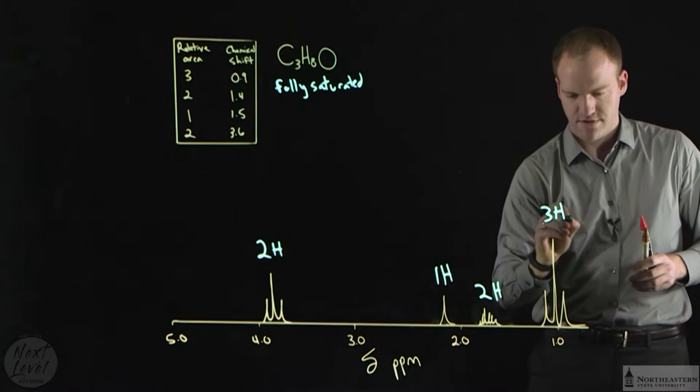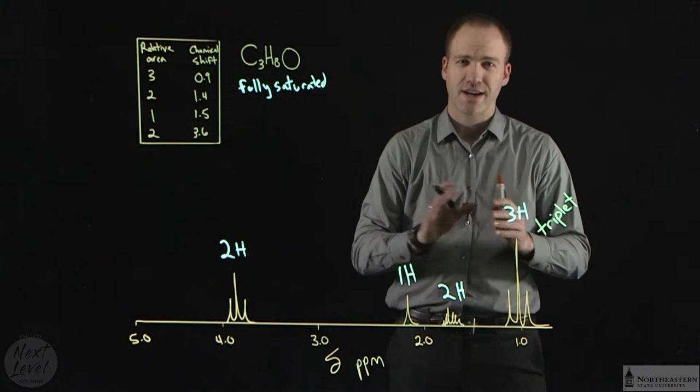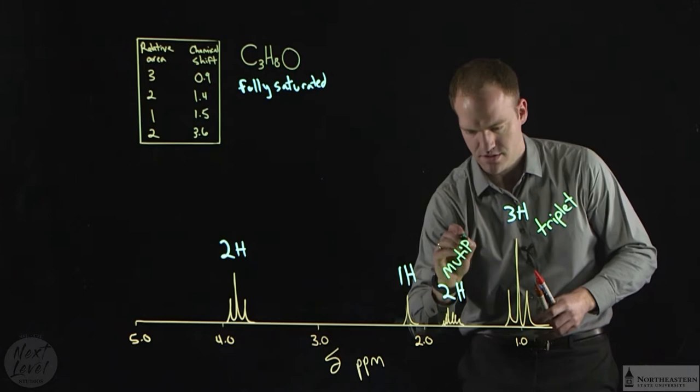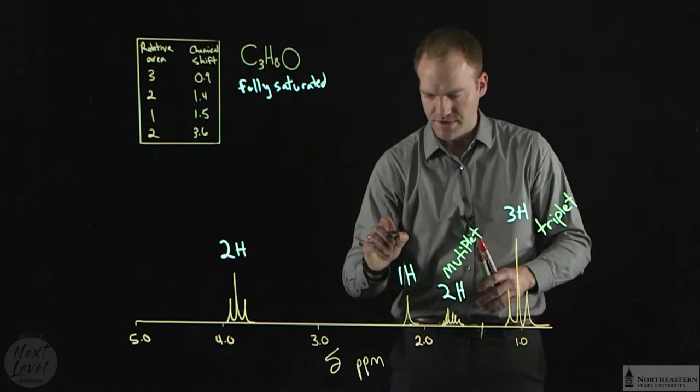This signal is a triplet. This signal has multiple peaks; we're not going to try and get the splitting here, so this is just going to be called a multiplet. This is a singlet, meaning that it has no neighbors. And this is another triplet.